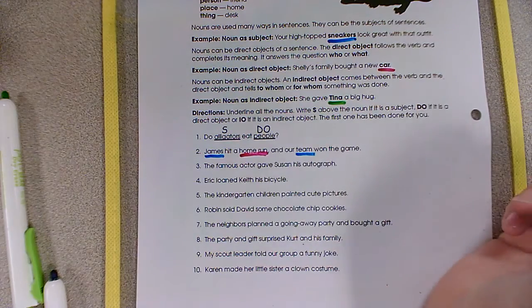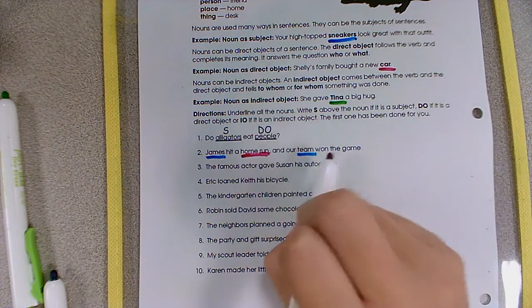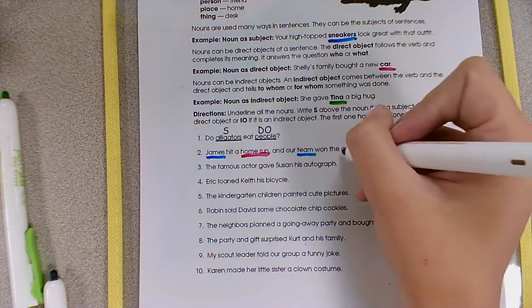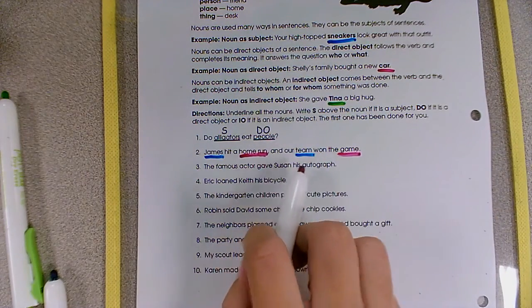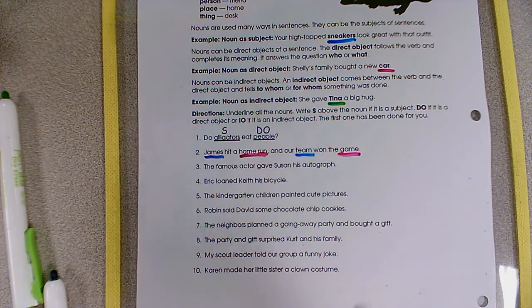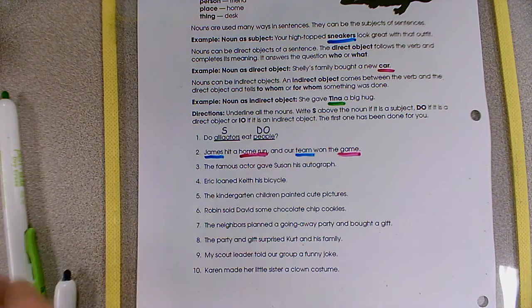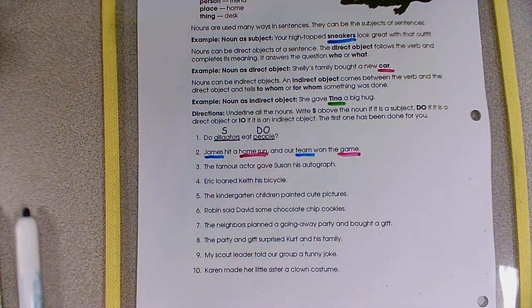Home run is our direct object. It tells us what James hit. Our team won the game. Game is going to be our direct object. Because we can ask ourselves, our team won what? The game. And we do not have an indirect object in this sentence.